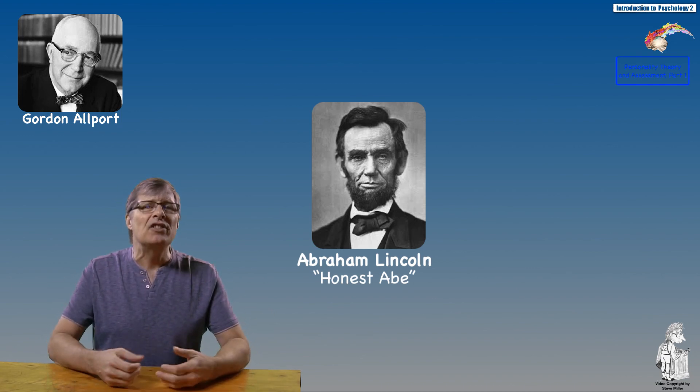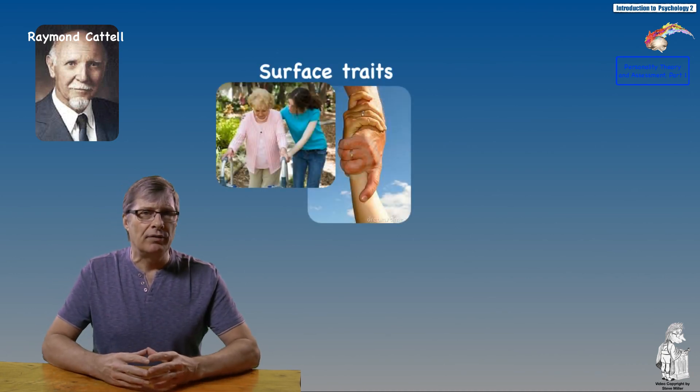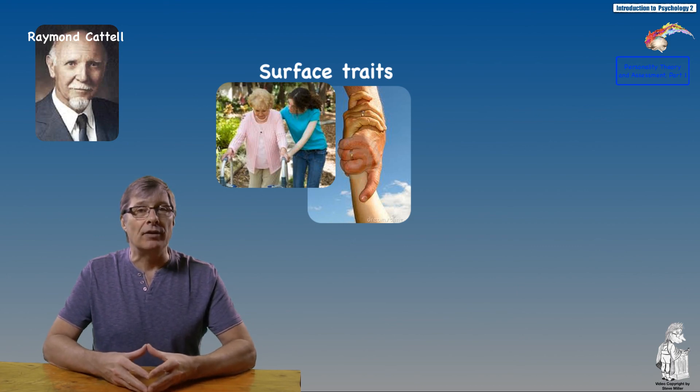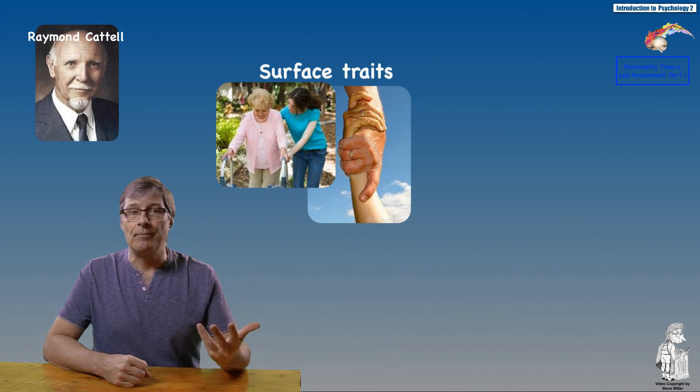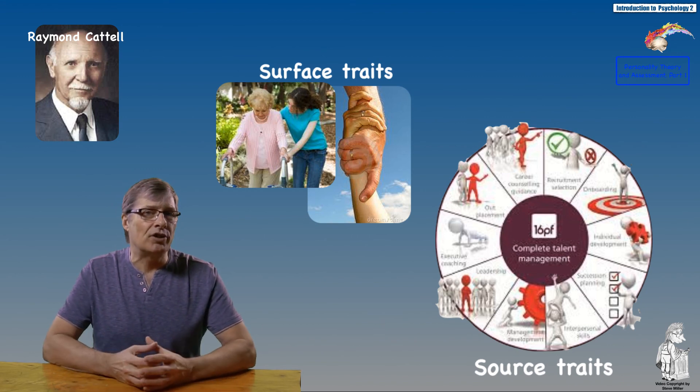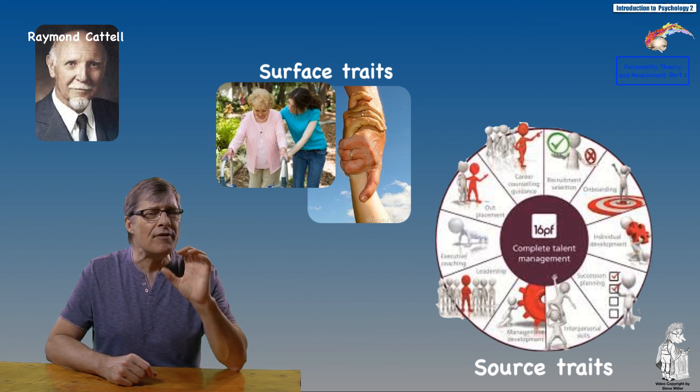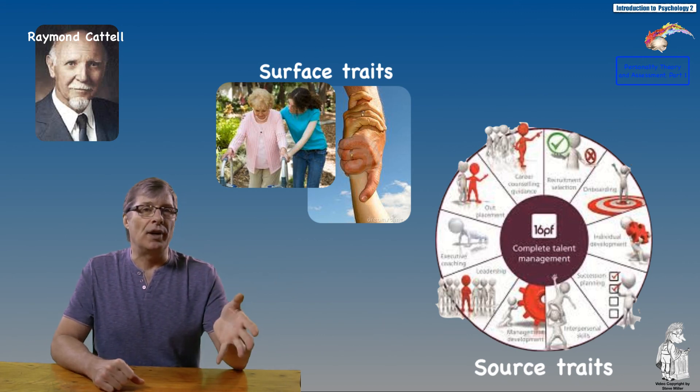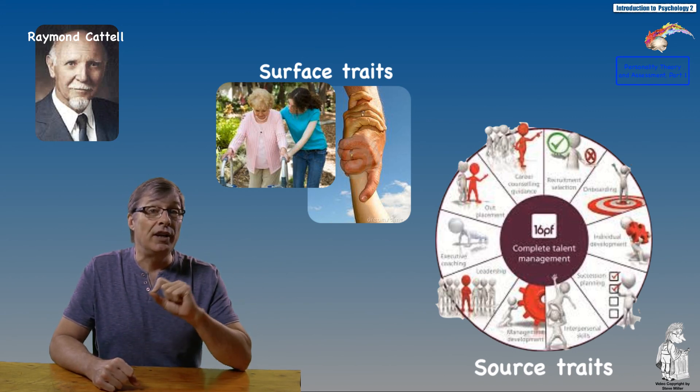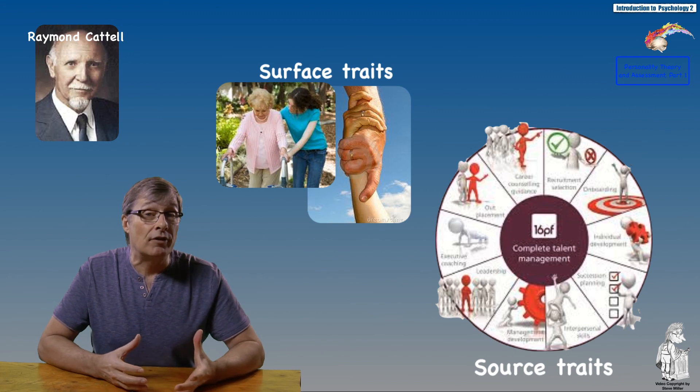Raymond Cattell describes surface or source traits. Surface traits refer to observable qualities of personality which you might use in describing a friend—things you can see. Source traits underlie the surface traits; they exist in all of us in varying degrees and make up the most basic personality structures and causes of behavior. Cattell found or described 23 source traits and studied 16 in particular detail, creating what he calls his 16 Personality Factor Questionnaire—the 16 PF.